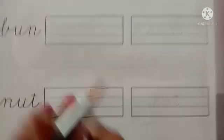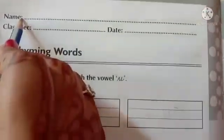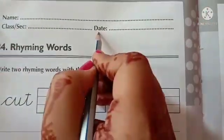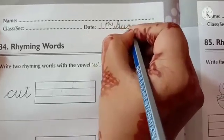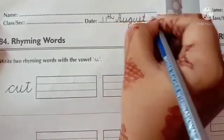Now, next book page, page number 84. First of all, write your name here. Your class, section and date here. What's the date today? Today is 11th August 2021.